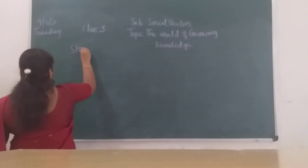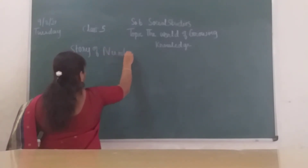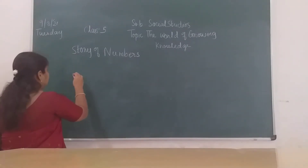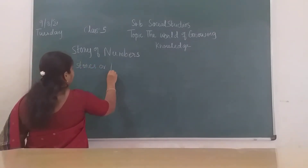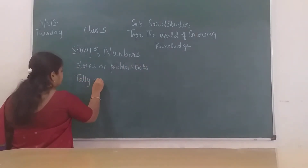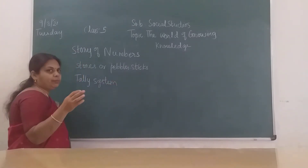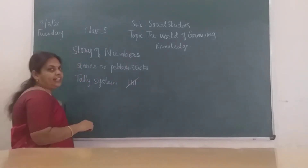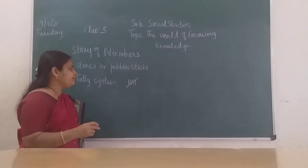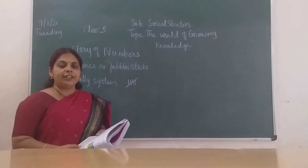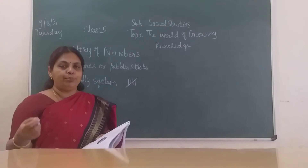They used the tally system. To show the number 5, they put four lines and then strike the fifth line through them. The tally system was used to keep track of animals, people, or quantities of grain — how much they had produced.